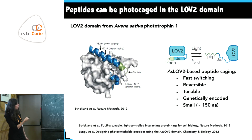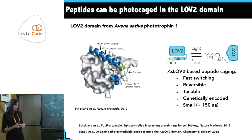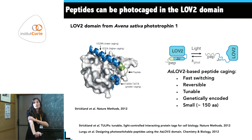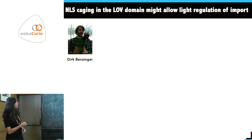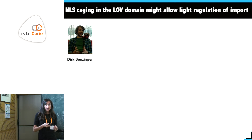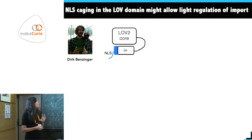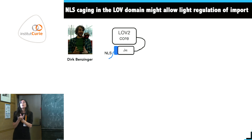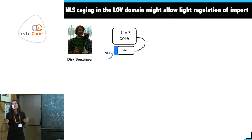Two groups showed the same concept in parallel — a recurring theme in optogenetics. In my lab, Dirk Benziger — now a PhD student in Mustafa Khammash's lab at ETH — came up with the idea of using this TULIPS concept to control nuclear import, by specializing the design to introduce an NLS as the appended peptide.